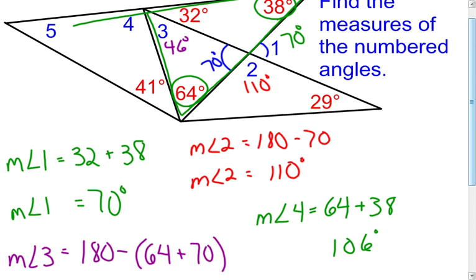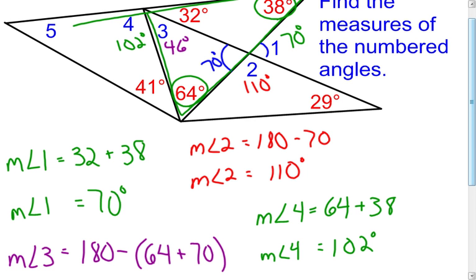Oh, sorry — my addition was off there. Let's try that again: 64 plus 38 is 102 degrees for the measure of angle 4.